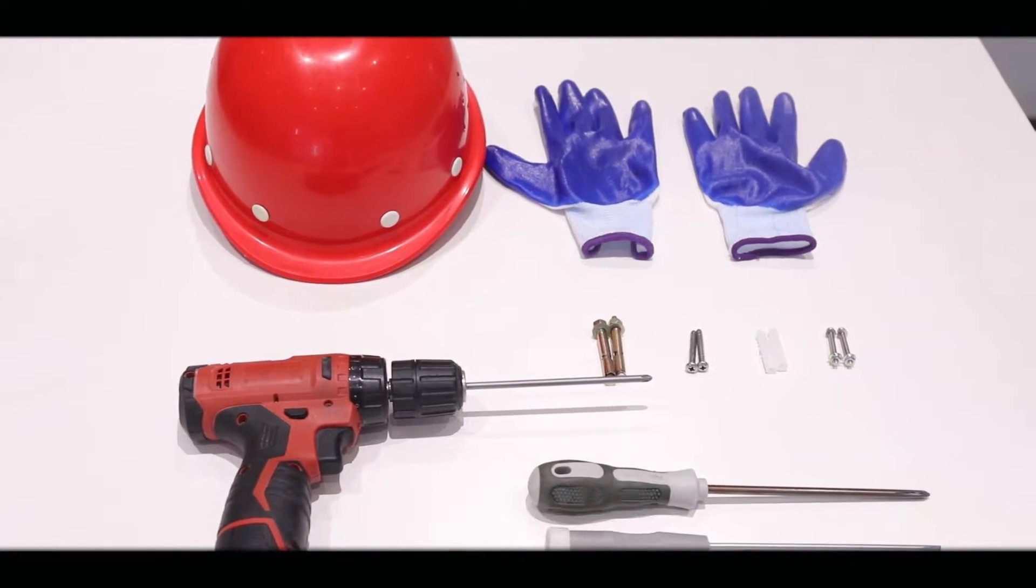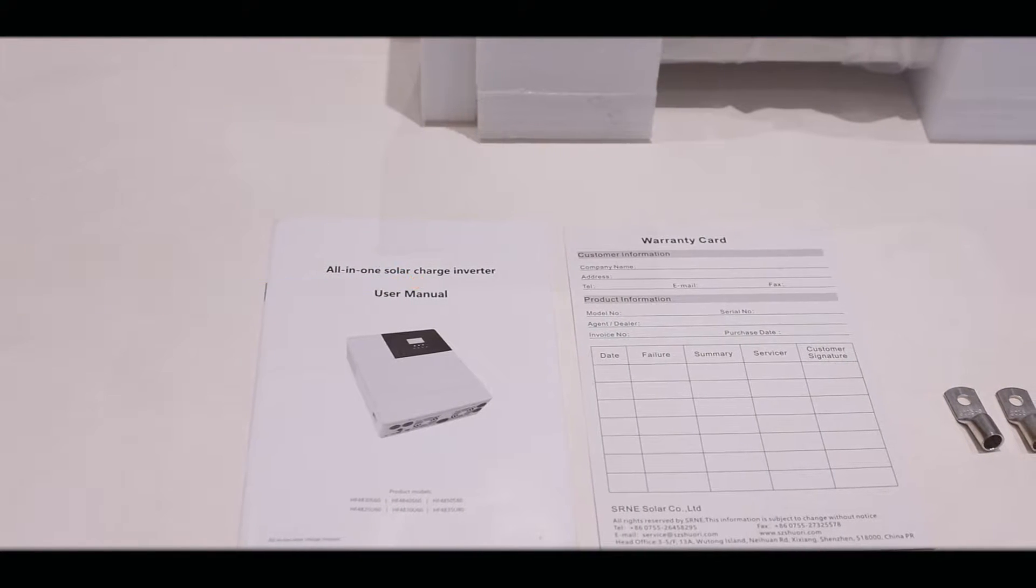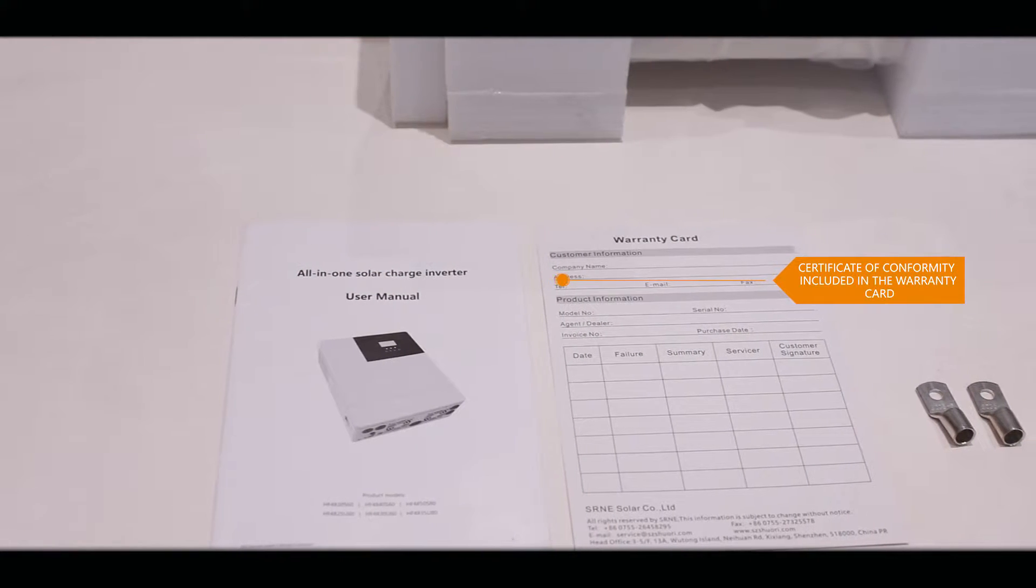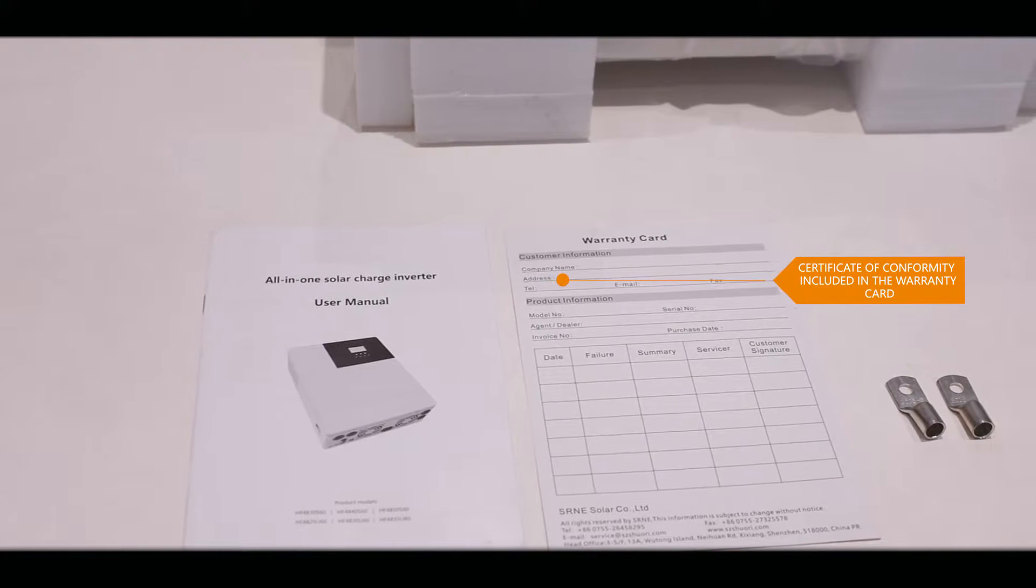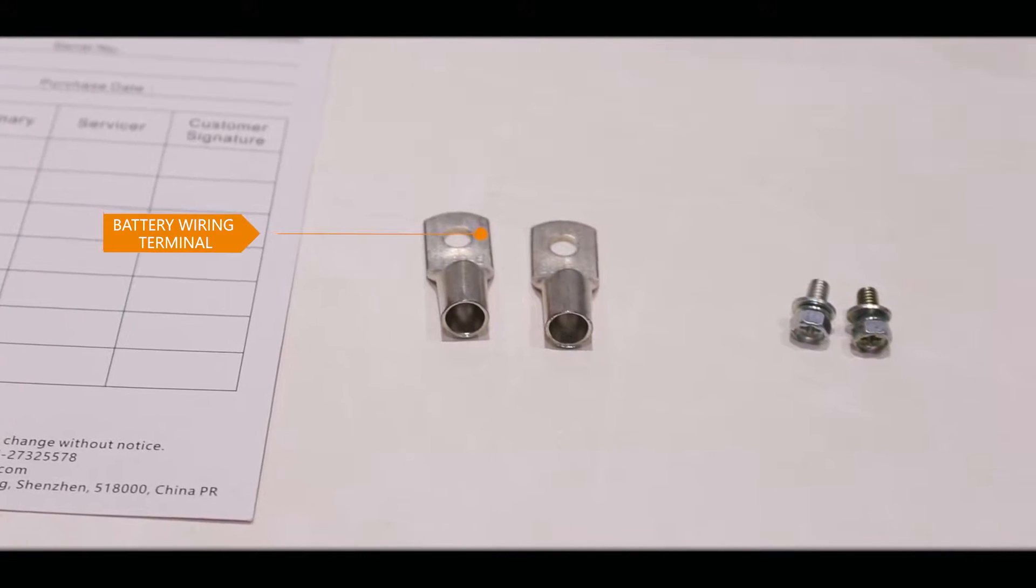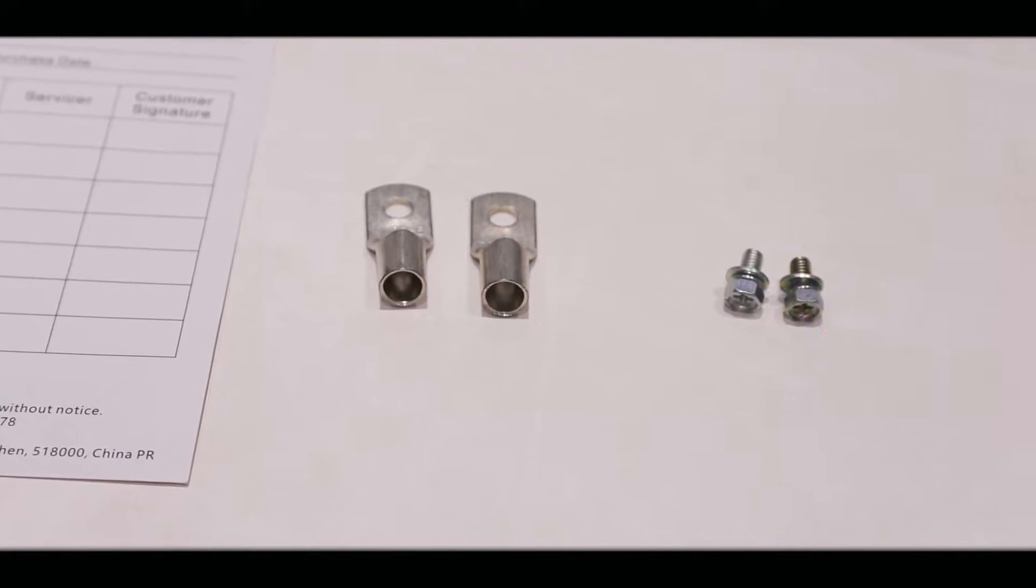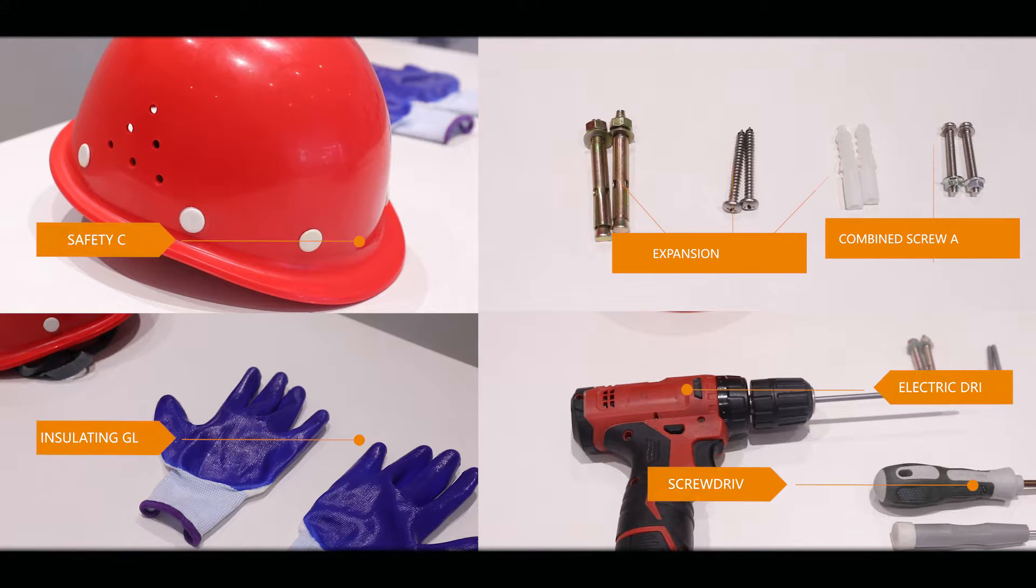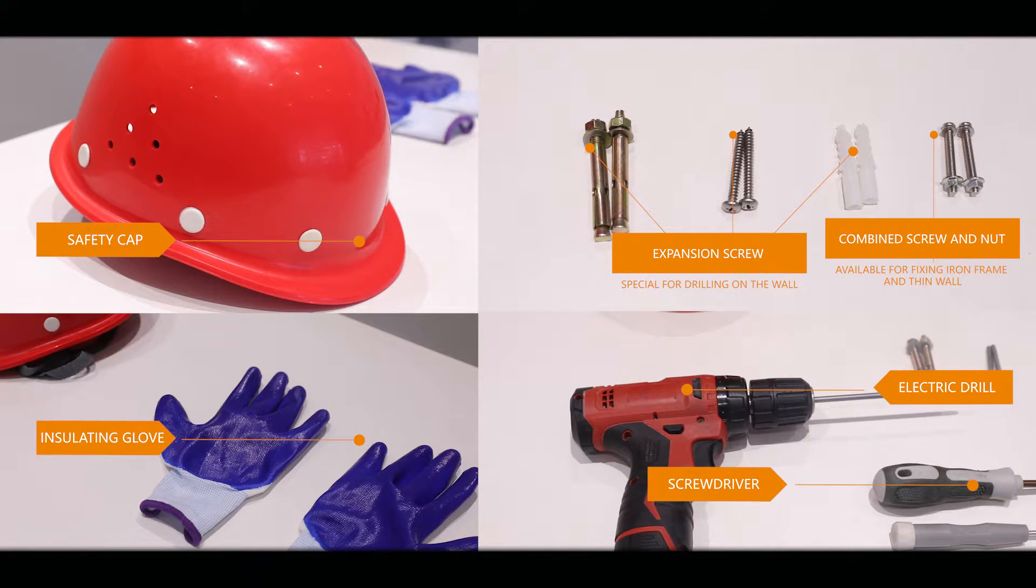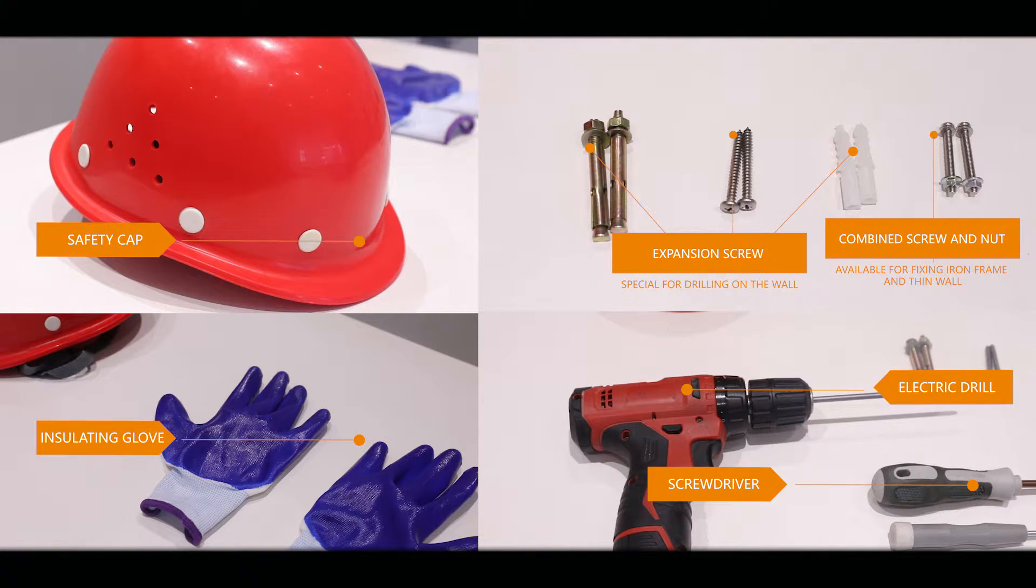Check the accessories: specification, certificate of conformity included in the warranty card, battery wiring terminal, fixing screw, safety cap, insulating glove, expansion crew, combined screw and nut, electric drill, and screwdriver.